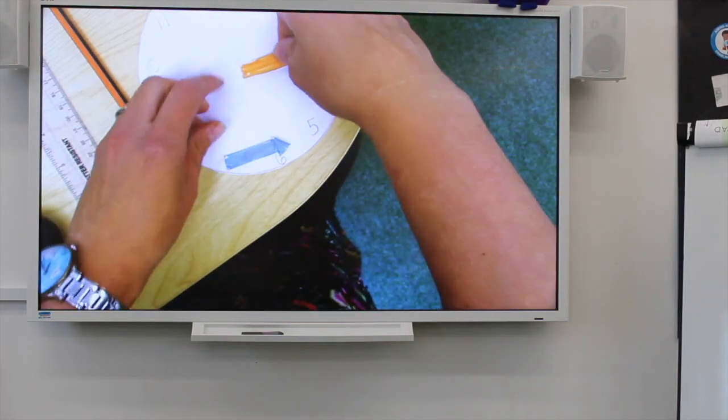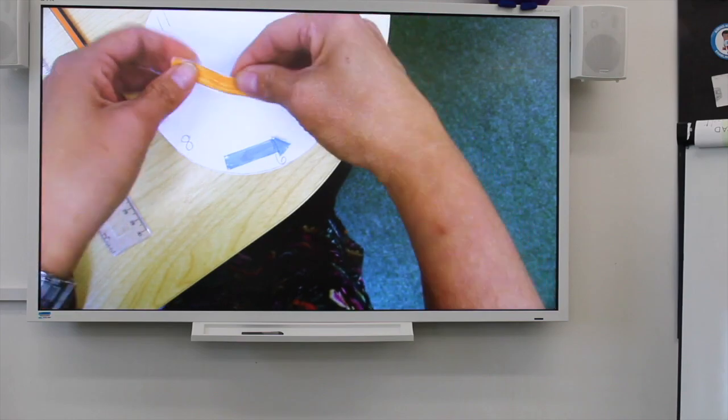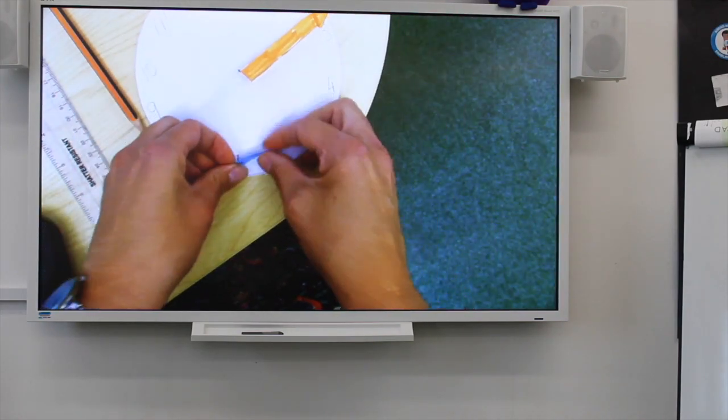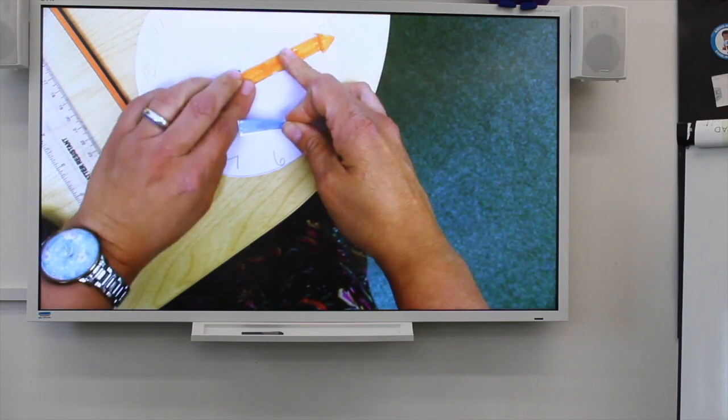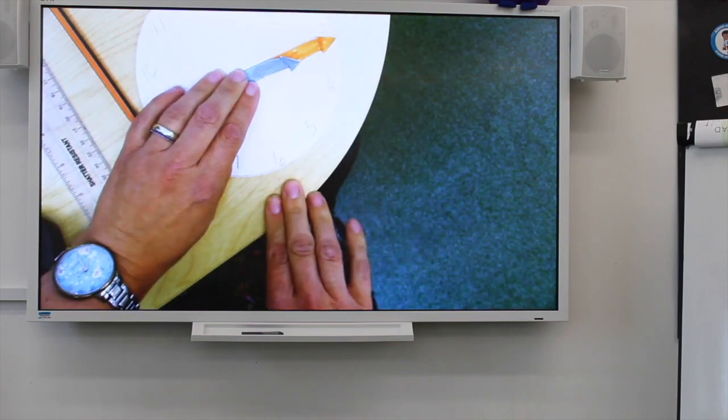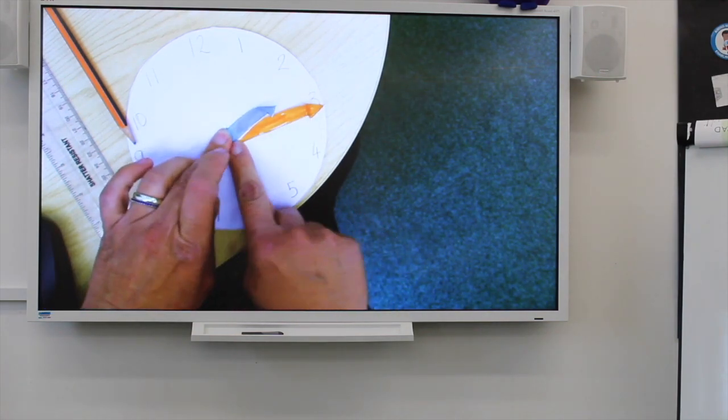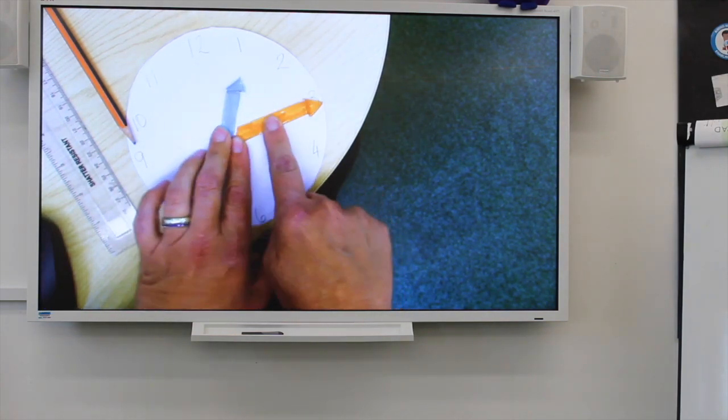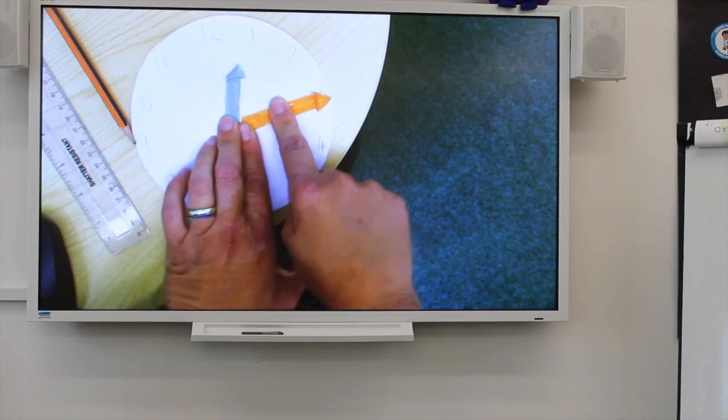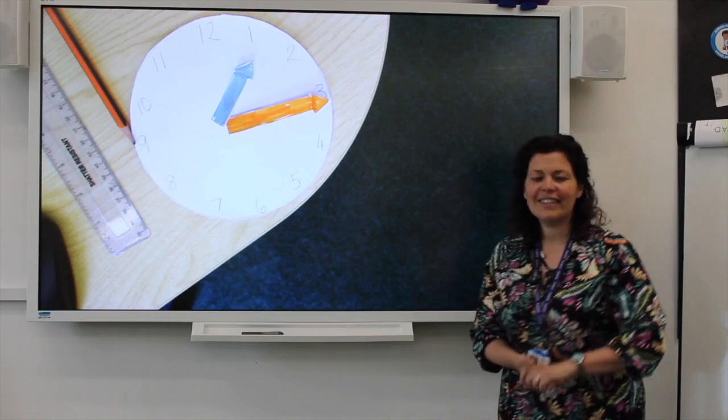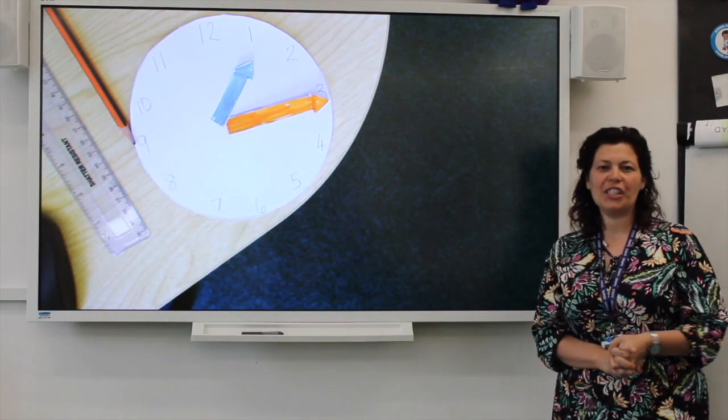You can then ask someone to give you a time, so maybe it's quarter past three, and you can make different times on your clock. If you've got a split pin, stick that there. If not, you can just show the time by just moving it around. I hope you enjoyed that, and I hope to see you soon. Take care. Thank you for watching. Bye-bye.